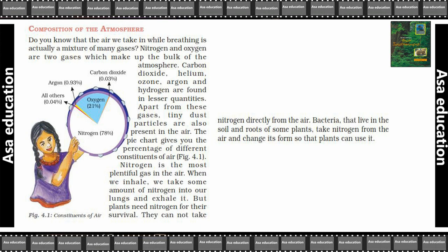Carbon dioxide, helium, ozone, argon and hydrogen are found in lesser quantities. Aur bhi gases hoti hain jis mein carbon dioxide hai, helium hai, ozone hai, argon hai, ya hydrogen — yeh sab kam quantity mein paai jaati hain. Apart from these gases, tiny dust particles are also present in the air. Ab in gases ke alaawa, kuch dust particles bhi air mein hoti hain.